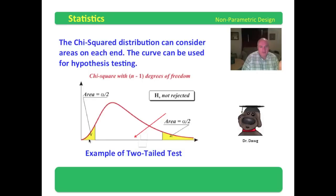And this is the null hypothesis is not rejected here. And of course, if the null hypothesis falls in either end of that, then it would be rejected. This is an example of a two-tailed test.